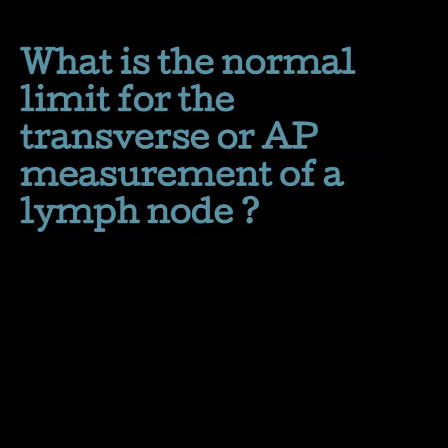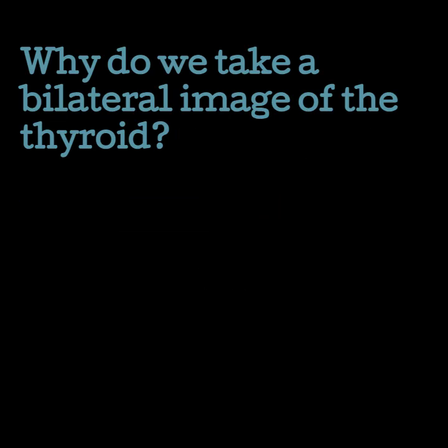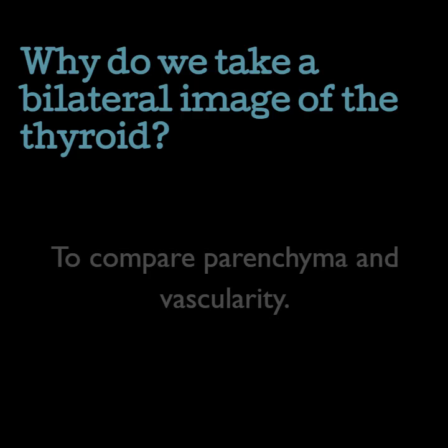What is the normal limit for the transverse or AP measurement of a lymph node? One centimeter. When lymph nodes become reactive, they start to become enlarged but keep their ovoid shape and normal blood flow. When lymph nodes become abnormal, they become large and round and anechoic, losing that fatty hilum. Why do we take a bilateral image of the thyroid? To compare parenchyma and vascularity.